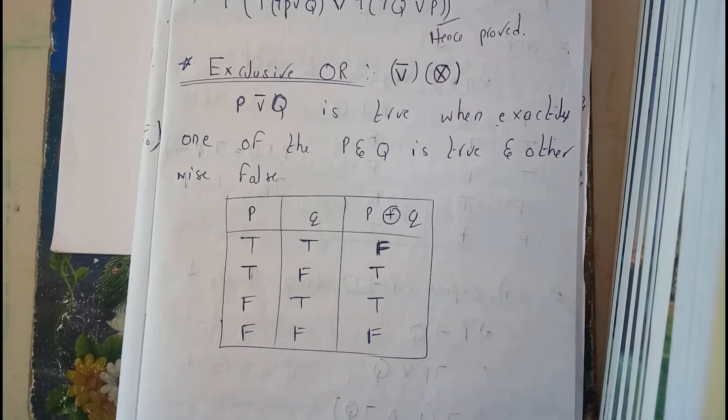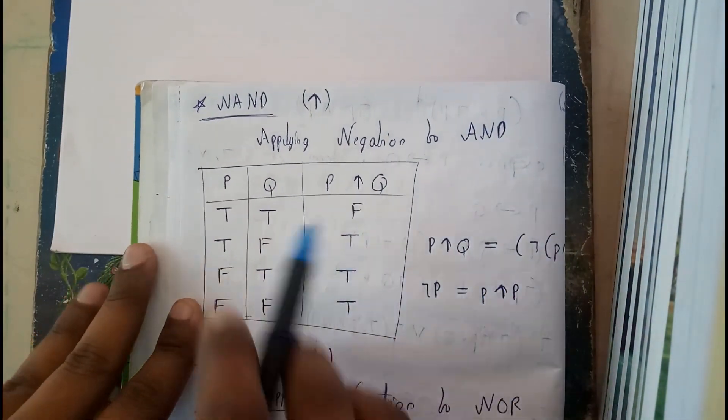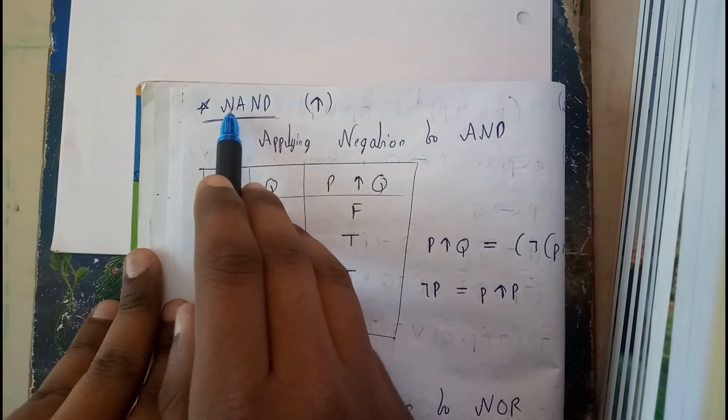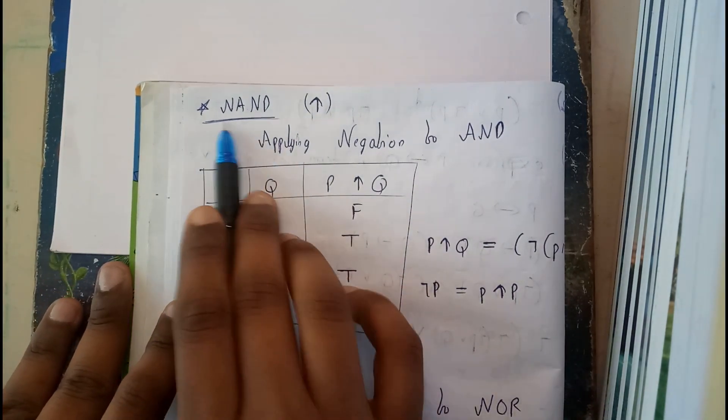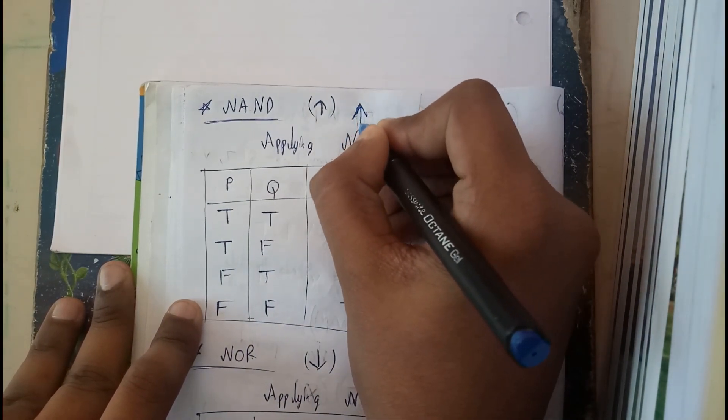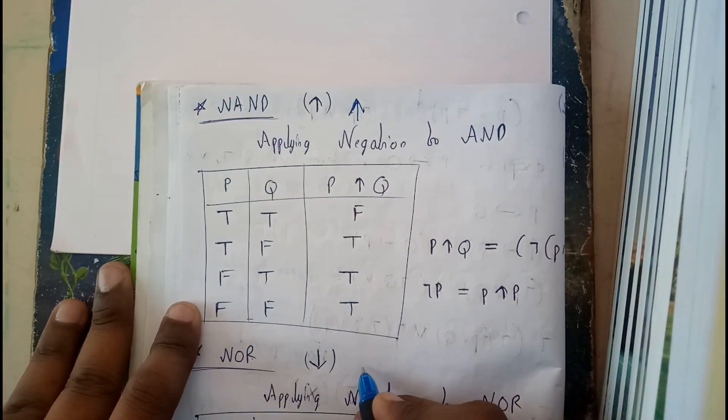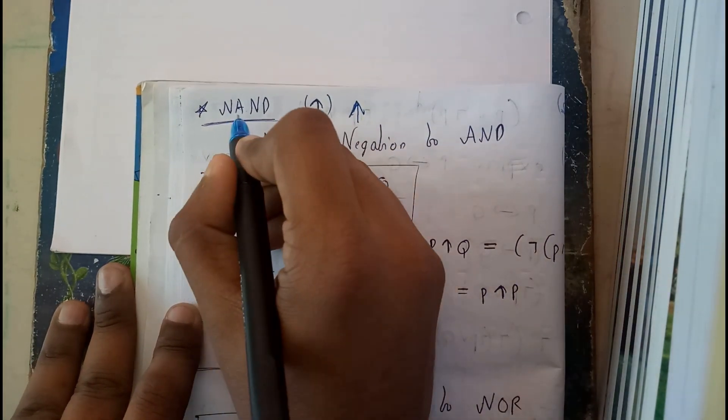Let's go through NAND and NOR. NAND is negation of AND, NOR is negation of OR. So NAND, the symbol is like this, just applying a negation. First we'll be going through NAND.